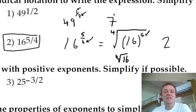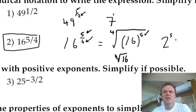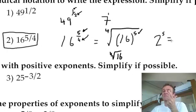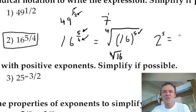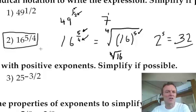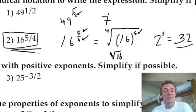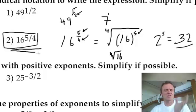Now I'm going to raise it to the power 5. What's 2 to the power 5? 2 times 2 times 2 times 2 times 2 is 32. So the answer to that is 32, because I 4th rooted it, then I raised it to the power 5.